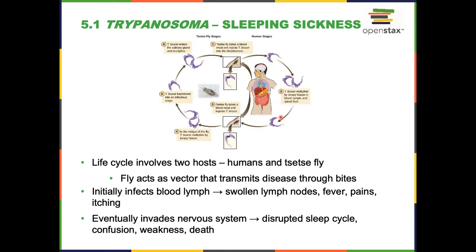Trypanosoma needs to complete its life cycle, so it waits for another tsetse fly to bite the infected human and then migrate to the fly. In the tsetse fly, it undergoes sexual reproduction, then waits in the salivary glands until the next human gets bitten. Humans cannot pass trypanosoma to other humans; tsetse flies cannot pass it to other tsetse flies. This interplay between two hosts is this whole complex life cycle we were talking about.